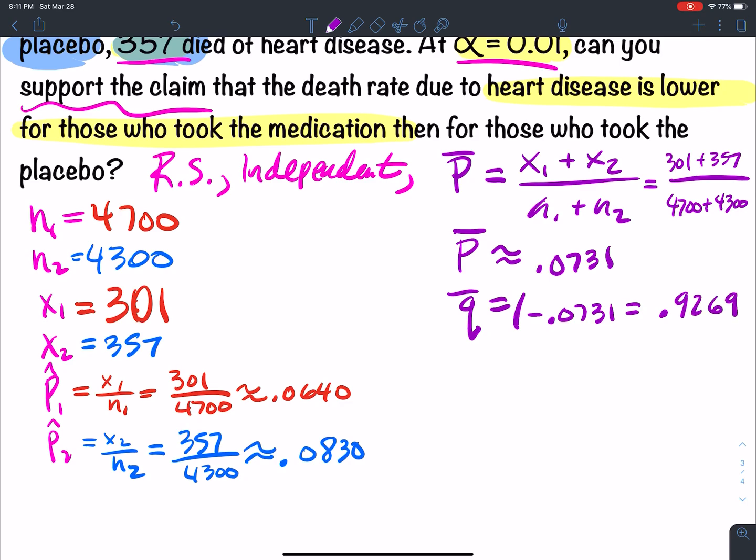So I need to make sure n1 P bar, n1 Q bar, n2 P bar, and n2 Q bar are greater than or equal to 5.